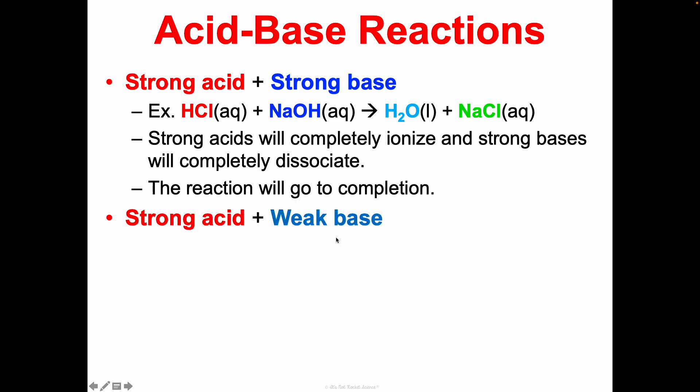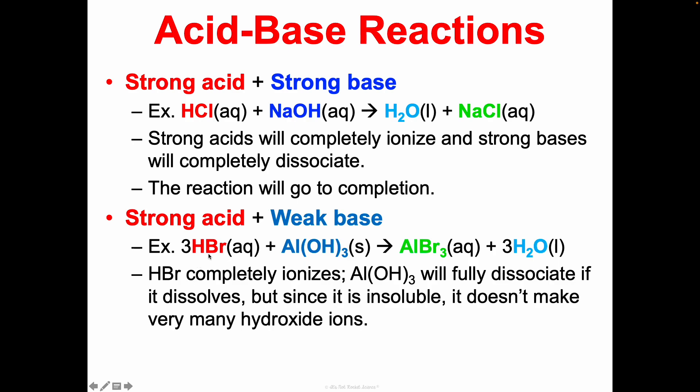Now, a strong acid with a weak base. Here is an example with HBr and aluminum hydroxide making aluminum bromide and water. So HBr will completely ionize because it's a strong acid, but the aluminum hydroxide, it would fully dissociate if it dissolved, but it's insoluble. So it doesn't make as many hydroxide ions as it could. So there's still going to be some aluminum hydroxide left here in the products. The reaction will go to completion, but we're still going to have that aluminum hydroxide hanging out.